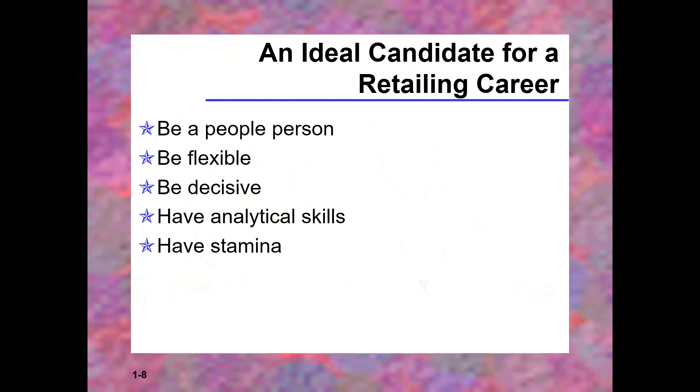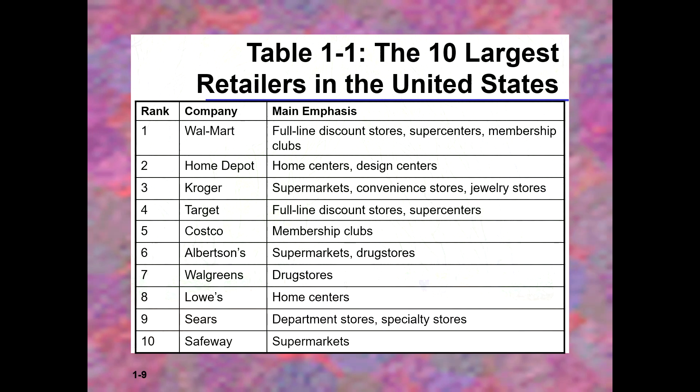When this chapter was written, the ten largest retailers in order were Walmart, Home Depot, Kroger, and Target, among others. This is just to give you an understanding of where retailing stands. Online retailing has certainly changed things — Costco would be a lot higher on this list today, and Walmart is still very strong.